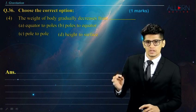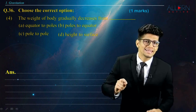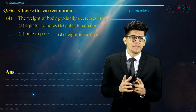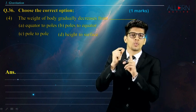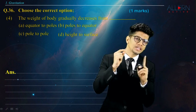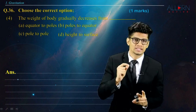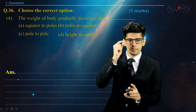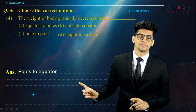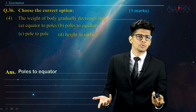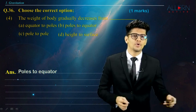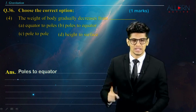Next question. The weight of a body gradually decreases from. Now, we know that at the poles, the value of small g is maximum. So, weight will also be maximum. And at the equator, it is minimum. That means the weight will decrease from the poles to the equator. Why? Because at the poles, r is less, so g is more. And at the equator, r is more, so g is less.